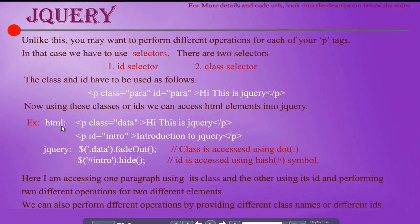Here I have written a p tag with class equal to 'data' and another p tag with an id. For the first p tag I am performing a fadeout operation, and for the second p tag I am performing a hide operation. I am accessing the first p tag using its class name — the class name is accessed using the dot operator. And the second p element I am accessing using the id name — the id is accessed using hash. This is very important to remember: class is accessed using dot and id is accessed using hash.